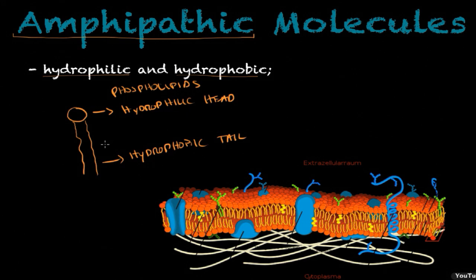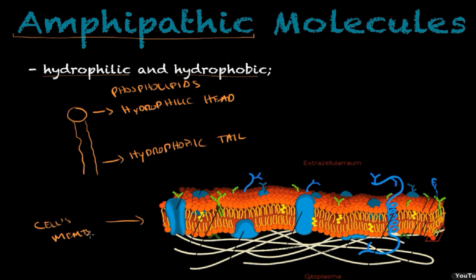Phospholipids are considered amphipathic molecules because they have both of these structures in the same molecule. The amazing thing about phospholipids — and that's why you find them in your cell's membrane — is that they are able to form a phospholipid bilayer, meaning you find two layers of phospholipids on the cell's membrane.